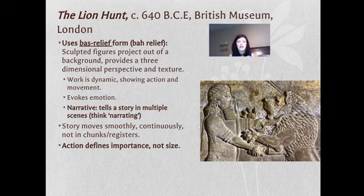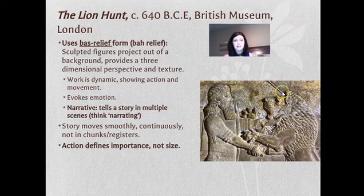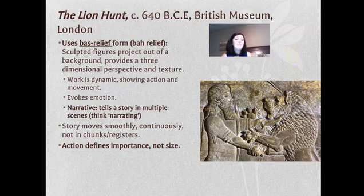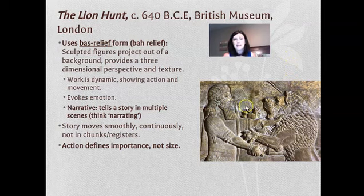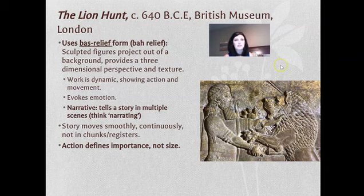What we also start to see in Mesopotamia is narrative art — telling a story where someone appears multiple times, narrating a particular scene. Over time, what makes you important shifts from size to action. The Assyrians aren't much bigger than the lion they're fighting, because if the lion were small it would make the feat look easy. Being the same size as or smaller than the lion makes defeating it look even more powerful — so we're starting to move away from strict hierarchy of scale.